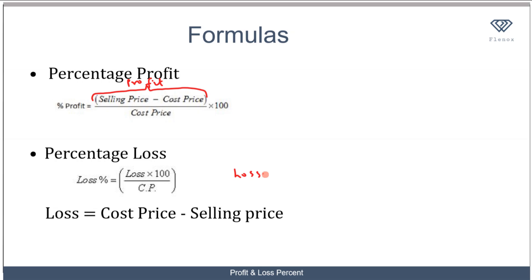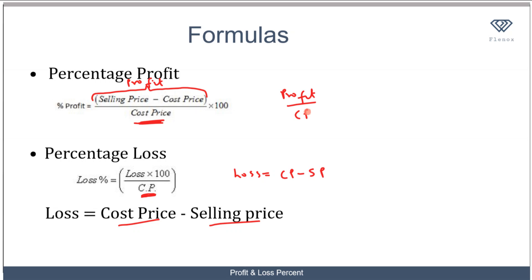For percentage loss, you have the loss over the cost price times 100, where loss equals cost price minus selling price. One important thing to note is that the denominator in both formulas is always the cost price. Never make the mistake of putting the selling price in the denominator. So: percentage profit equals profit over cost price times 100, and percentage loss equals loss over cost price times 100.